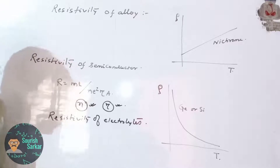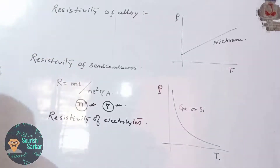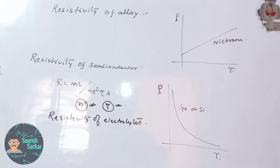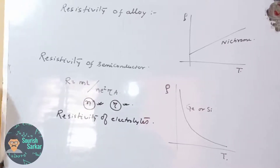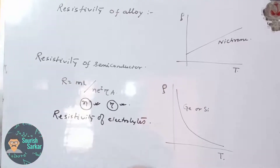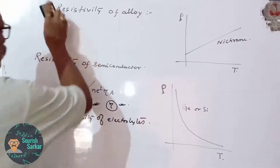For electrolytes, resistivity also decreases with the rise in temperature. The reason is that with the rise in temperature the viscosity of the electrolyte decreases, so the ions get more freedom to move inside the electrolyte, hence the resistivity of the electrolyte decreases.